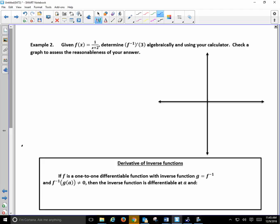Given f(x) = 1/(x+2), determine f inverse of 3 algebraically and using your calculator. Check the graph to assess the reasonableness of your answer. We're not going to actually use our calculator here, but I'm going to quick sketch a graph. This is a vertical asymptote at -2. The horizontal asymptote would be as we let x go to infinity, the output gets extremely small, so 0. So, this is the graph of f(x).